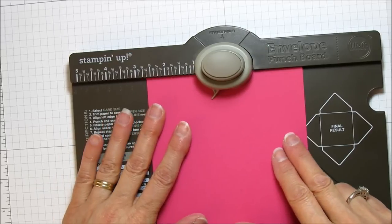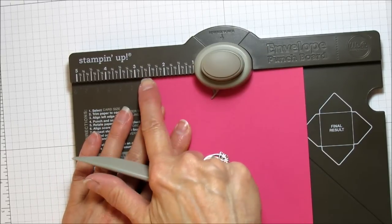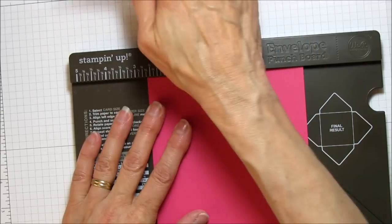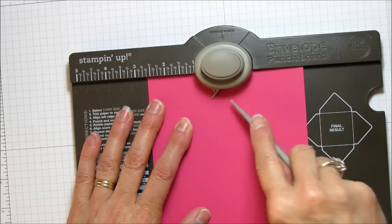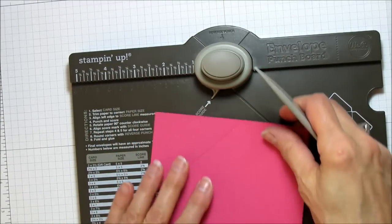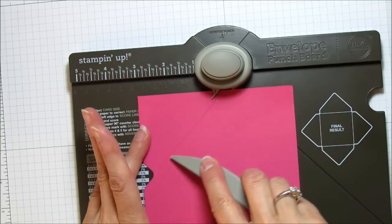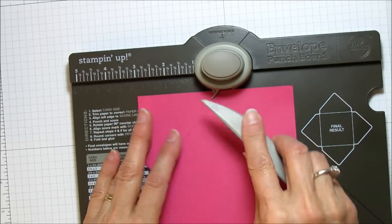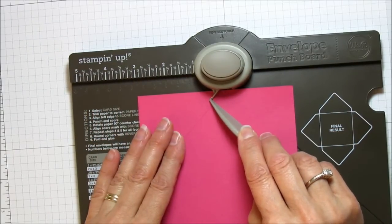So I'll go to the two and five eighths inch mark here and I'm going to punch and then you just score. Now you're going to turn it and you're going to start following this score mark right here.